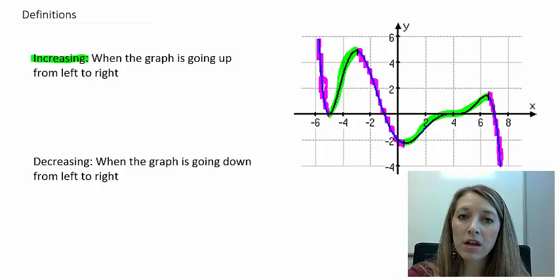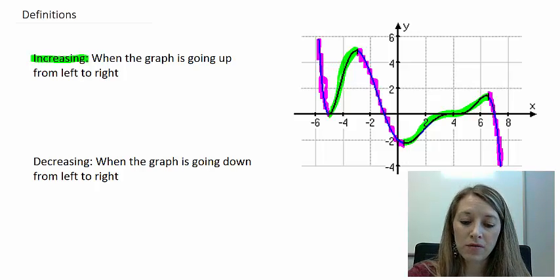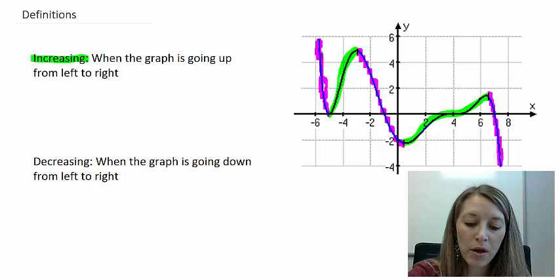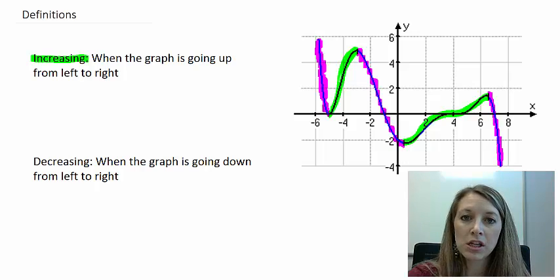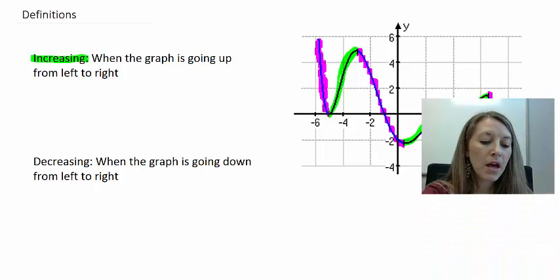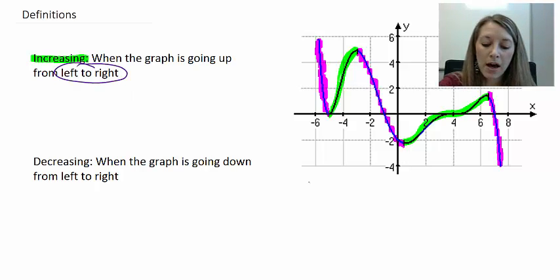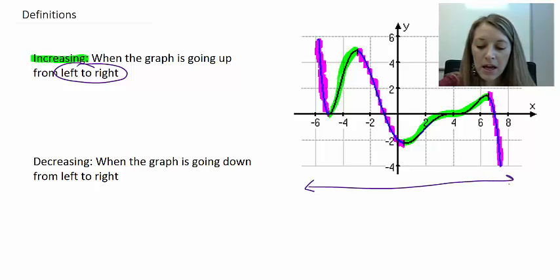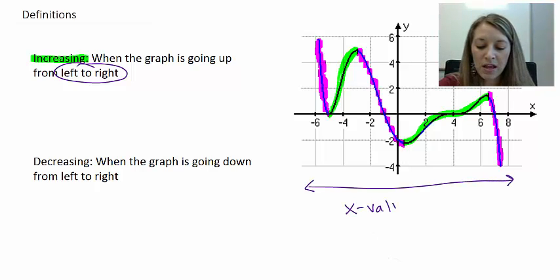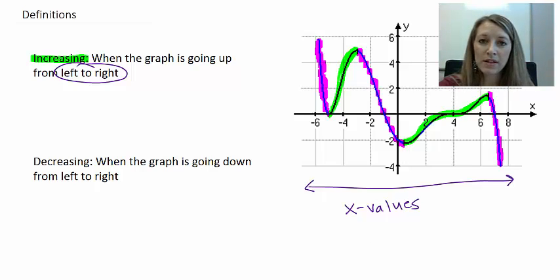It's really obvious to pick it out visually. The more difficult thing is to actually specify the intervals, because it needs to be in intervals — I have a whole interval of where it's increasing and decreasing, not just a specific point. The key part is the phrase 'from left to right,' so increasing and decreasing should always be specified using x-values, not y-values.